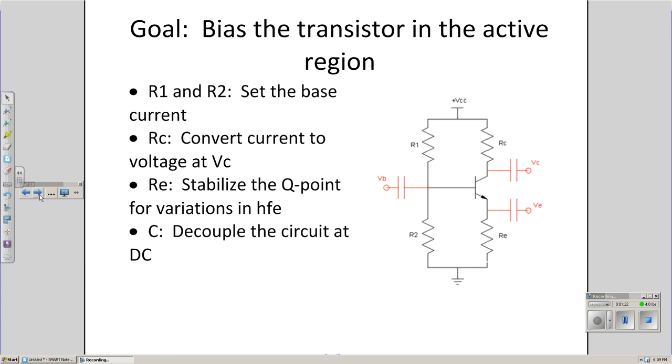The capacitors decouple the circuit to DC. Essentially what we're going to do is design the circuit for a specific Q point, say right in the middle of the load line, and then use that circuit to amplify an AC signal. When I do that, I don't want the AC signal from my iPad, say, to change the Q point because I just went to a lot of trouble designing for that Q point. Capacitors decouple your circuit at DC so the outside world has no effect on your design at DC.